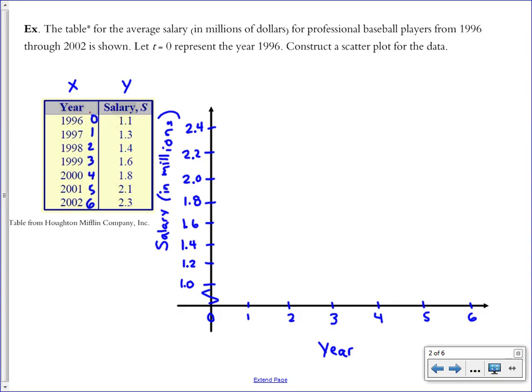Now I'm ready to put my points on the coordinate plane. My first point is located at 0, 1.1. Put the point there. Then I have 1, 1.3, 2, 1.4, 3, 1.6, 4, 1.8. Again, use a ruler if you have one so this is as precise as you can be. 5, 2.1, and 6, 2.3. Now I've got my seven points.